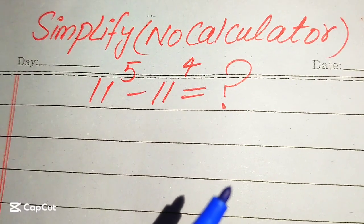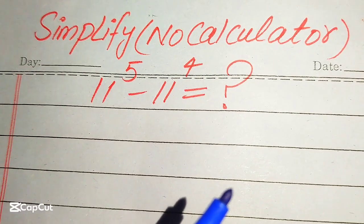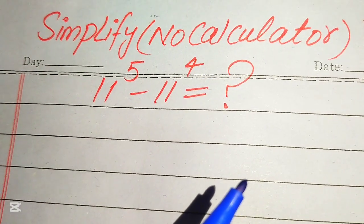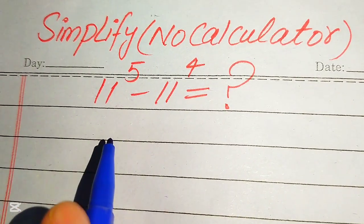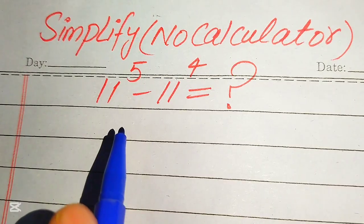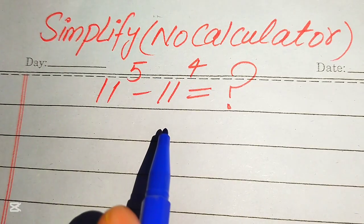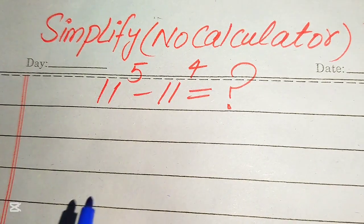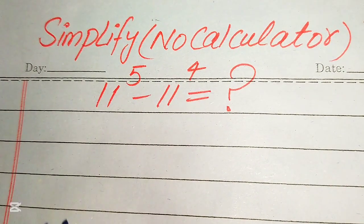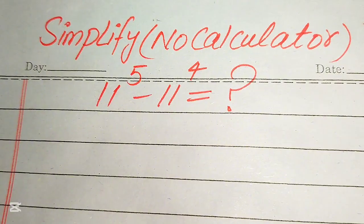Hello everyone. How to simplify this nice algebraic expression: 11 to the power of 5 minus 11 to the power of 4. We need to write this algebraic expression into simplified form.